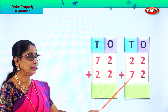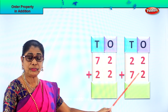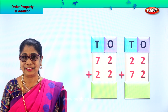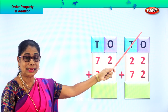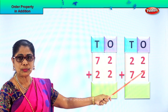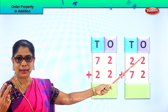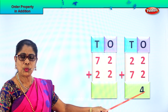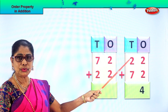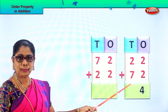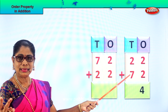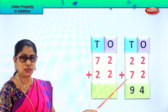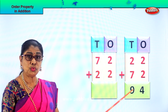Look what you have: 22 plus 72, or 72 plus 22. Let's add and find out. Let's add all the ones: 2 ones plus 2 ones — 2 in the mind, take 2 on your fingers. After 2: 3, 4. So 2 plus 2 is 4 ones. Then 2 tens plus 7 tens — 7 in the mind, take 2 on your fingers. After 7: 8, 9. So you get 9 tens. 22 plus 72 gives you 94.